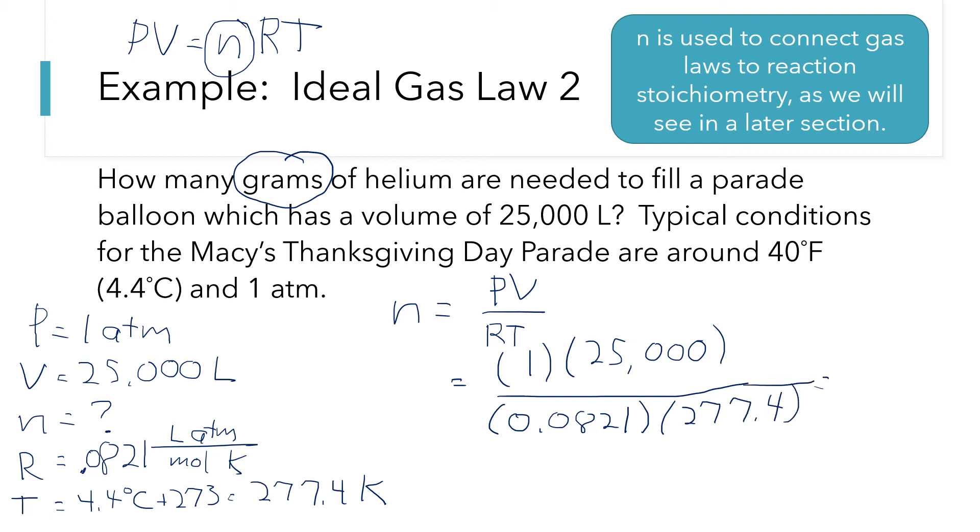All right. So if I run that through my calculator now, I've got 25,000 in the top. In the bottom, I've got 0.0821, and then I'm also dividing by 277.4. And that's giving me a number of 1097 or 98 moles.